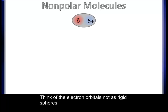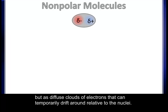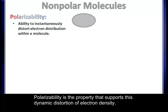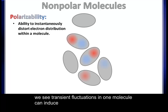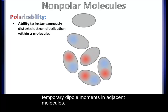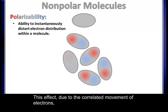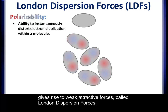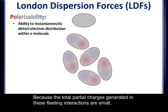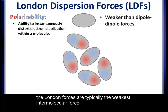Think of the electron orbitals not as rigid spheres, but as diffuse clouds of electrons that can temporarily drift around relative to the nuclei. Polarizability is the property that supports this dynamic distortion of electron density. When a collection of bromine molecules is considered, we see that transient fluctuations in one molecule can induce temporary dipole moments in adjacent molecules. This effect, due to the correlated movement of electrons, gives rise to weak attractive forces — so-called London dispersion forces.